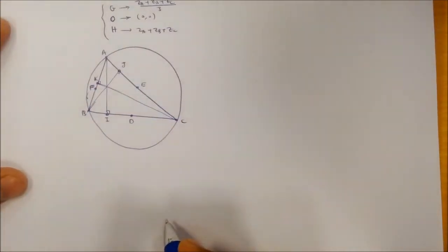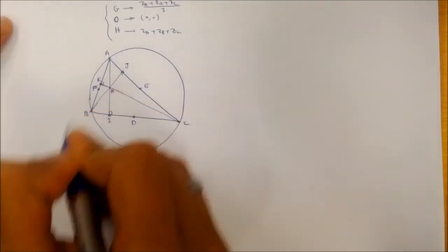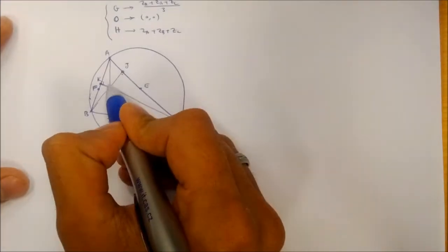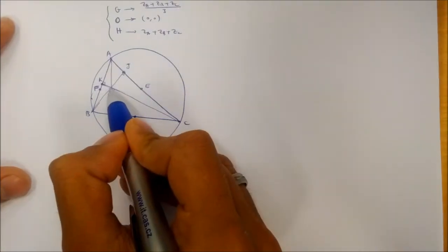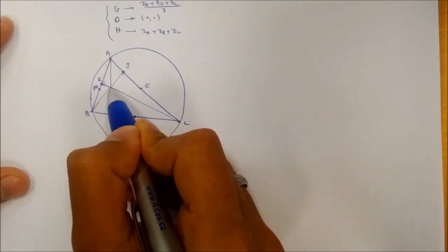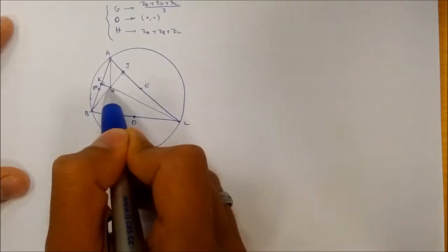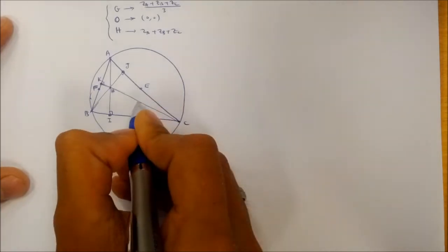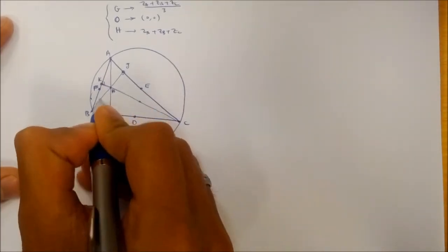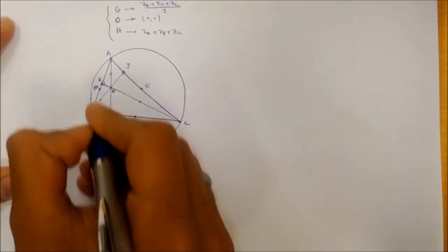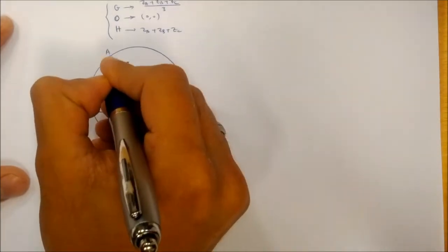The final three points are the midpoints of the line segments AH, BH, and CH. I consider the lines connecting the orthocenter to each of the vertices of triangle ABC, and I take their midpoints, which I call M, N, and L.